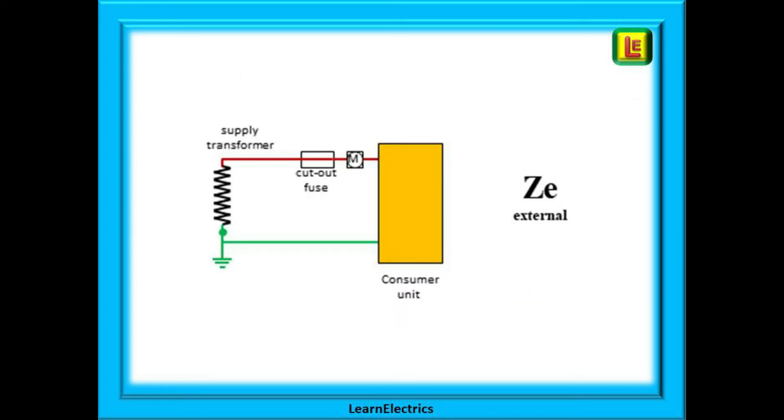ZS is a measurement of two separate parts of the electrical installation: the internal part and the external part.